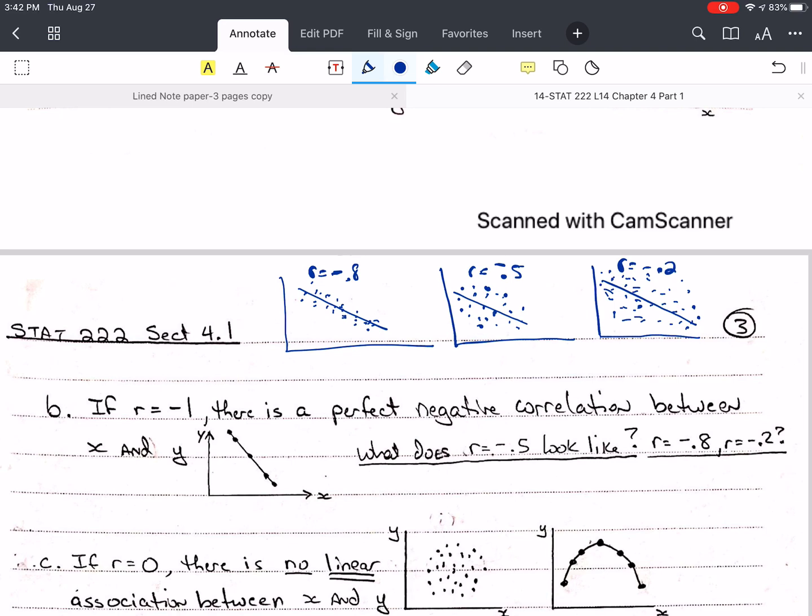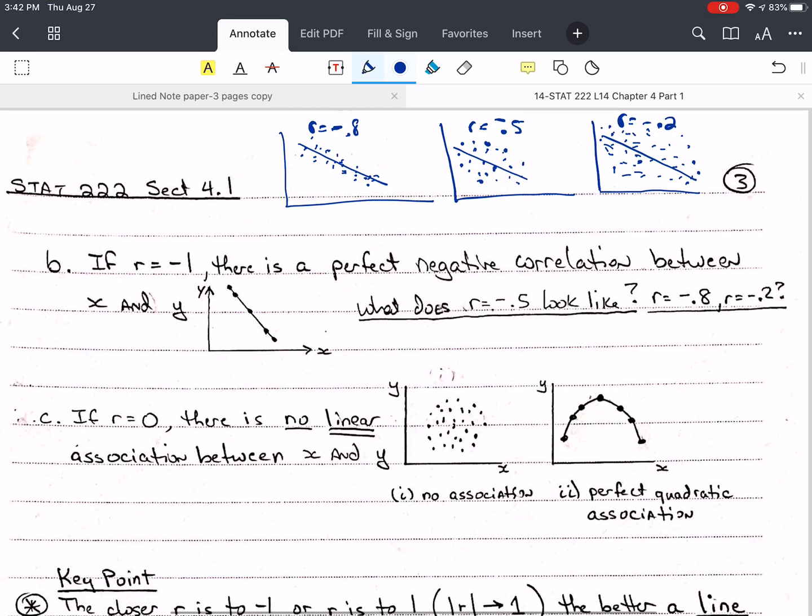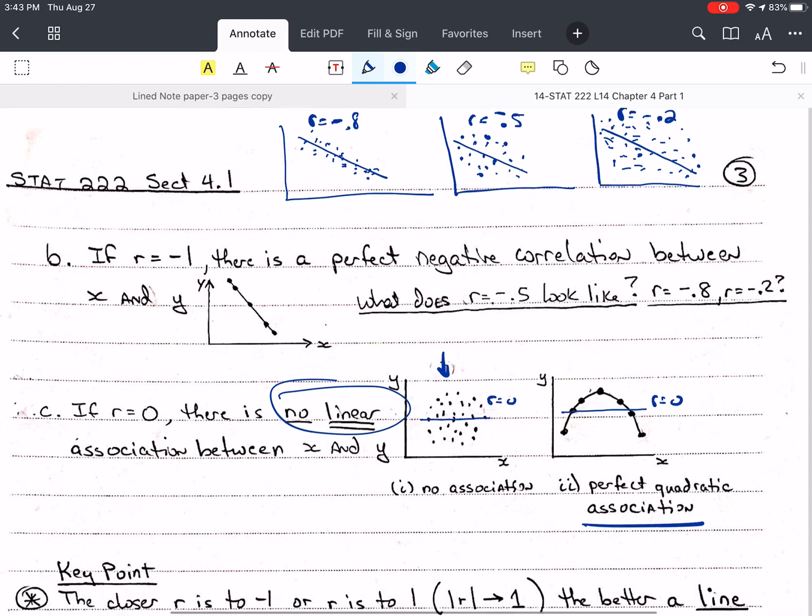The sign of r determines if the slope is positive or negative. If r is negative, the slope is negative. If r is positive, the slope is positive. If r is 0, there is no linear association between x and y. Here are two cases where you're going to get r equals 0. Here the computer is going to draw a line like this, and here the computer is going to draw a line like this. It's going to say there is no linear association. Here, there is no relationship between x and y, no association whatsoever. Here, we have a perfect quadratic association, a parabola. It's perfect, but because it's not a straight line, r is going to be calculated as 0. It's not the right shape.